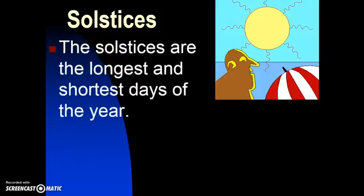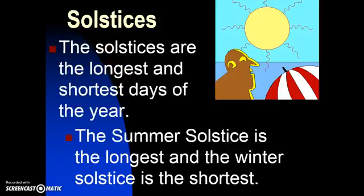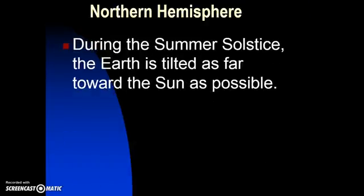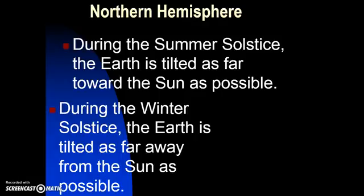Solstices are the longest and shortest days of the year. The summer solstice is when we have the longest day and the winter solstice is when we have the shortest day. During the summer solstice, the Earth is tilted as far toward the Sun as possible, so it's receiving a lot of sunlight. During the winter solstice, the Earth is tilted as far away from the Sun as possible, receiving less sunlight, making it a shorter day.